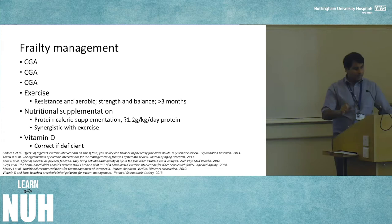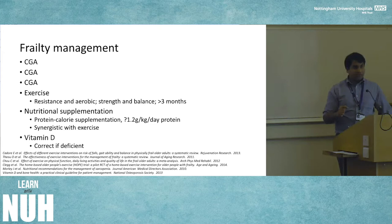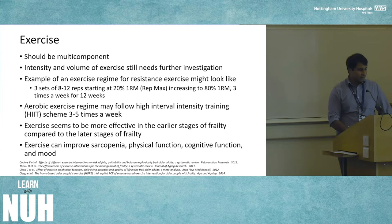Beyond CGA there is emerging evidence around exercise, nutritional supplementation, and vitamin D. Exercise must combine resistance and aerobic training — strength and balance — and be prolonged, similar to falls prevention work, lasting over three months. For nutrition, younger adults need 0.7 grams per kilogram per day of protein; older people actually need more than that because of the catabolic state described earlier, and the effects are synergistic with exercise. If vitamin D is deficient we need to correct it.